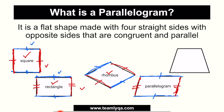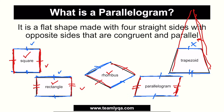Now here's another shape you may be familiar with — we call this a trapezoid. Ang trapezoid ba ay parallelogram? Let's check the criteria. Meron ba siyang four straight sides? Straight naman siya. Pero, are the opposite sides congruent and parallel? Itong side na ito at side na ito — visually, hindi sila magkapareho ng measurement. So hindi na siya congruent. And kahit yung kabilang pair, hindi rin sila necessarily parallel — kung i-extend natin yung lines, magme-meet sila. So these are not parallel lines. A trapezoid is not a parallelogram.